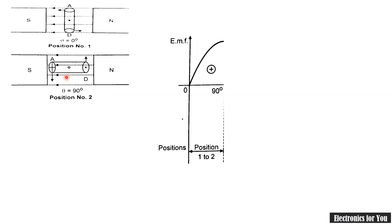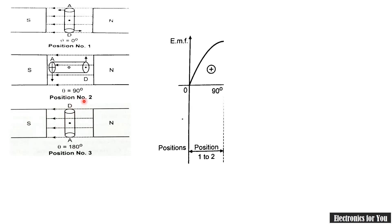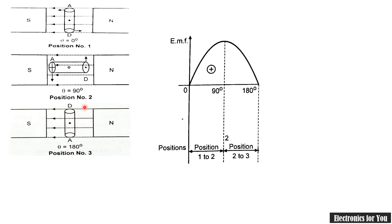If this coil is again moved in anti-clockwise direction by 90 degrees, that is from position number 2 to position number 3, from 90 degrees to 180 degrees, the EMF will drop. Again, the two conductors are parallel and therefore the EMF at this point is zero, reducing from the peak, and we will get a waveform just as indicated.